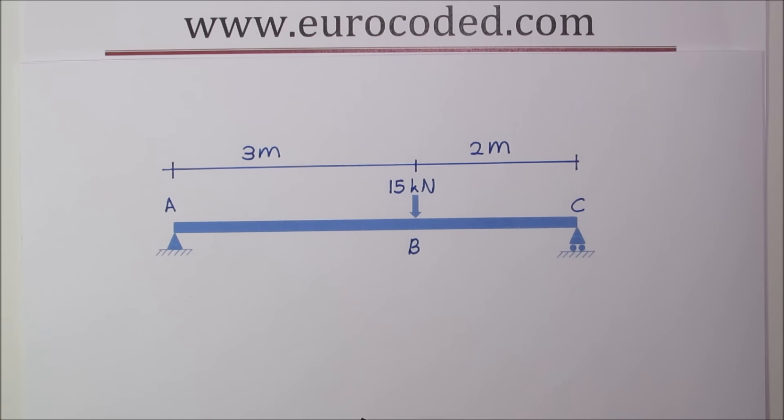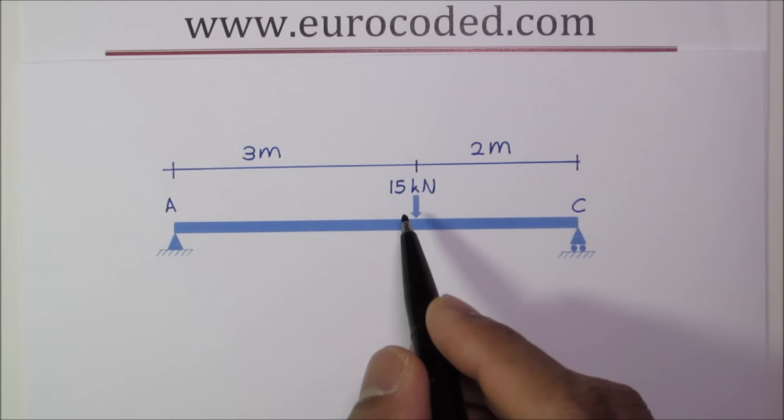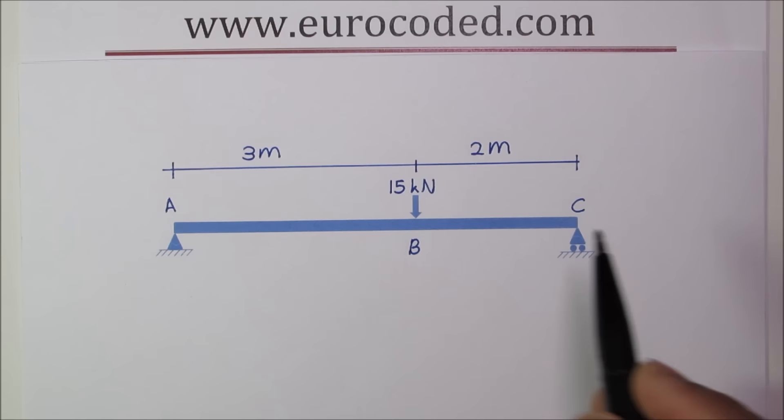In this example we are looking at a simply supported beam. As you can see it is a 5 meter long beam and we have a 15 kilonewton load applied at B. Distance from A to B is 3 meters and from B to C is 2 meters.